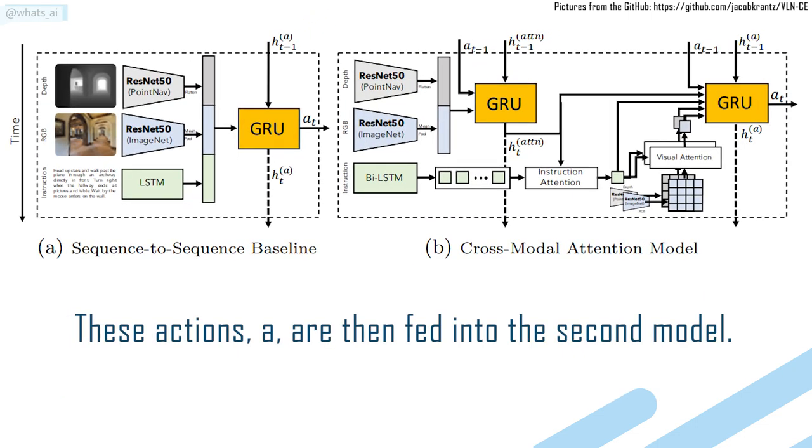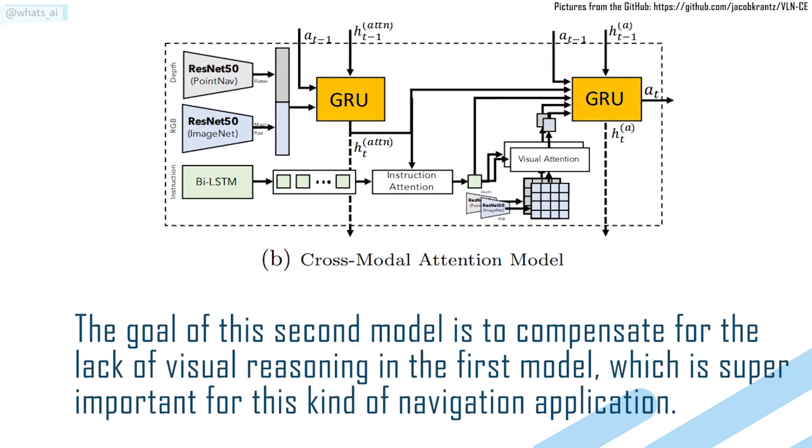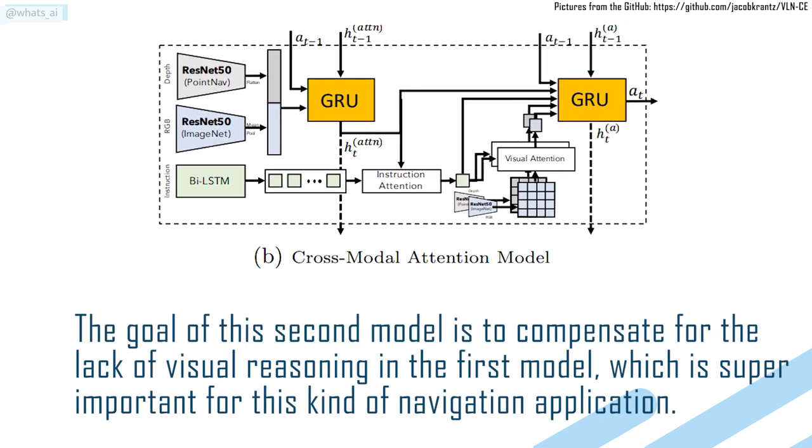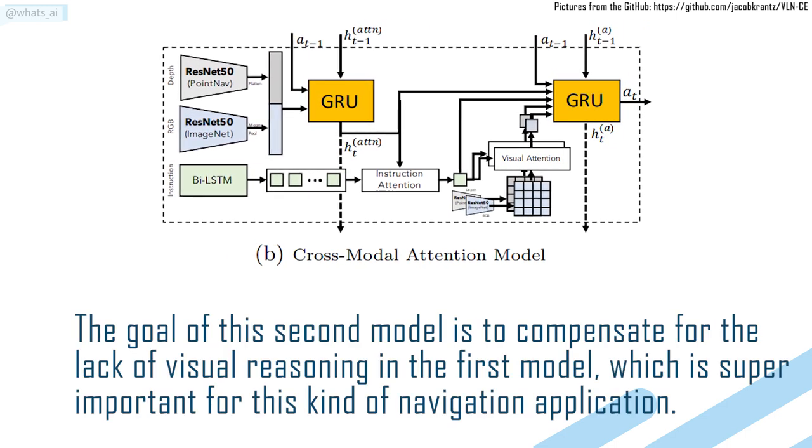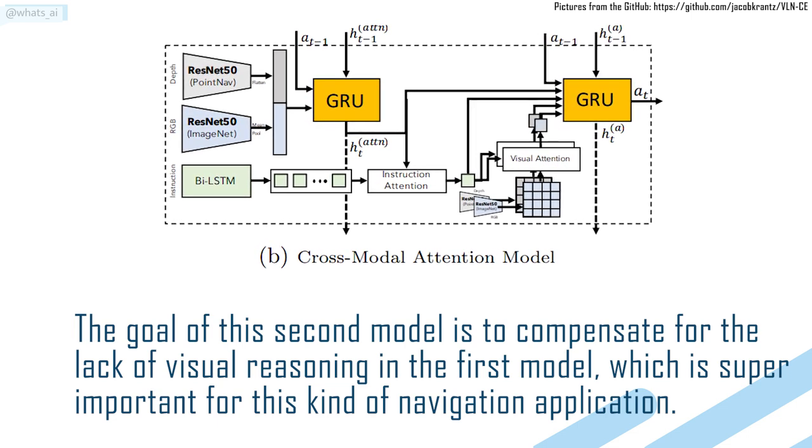These actions, A, are then fed into the second model. The goal of this second model is to compensate for the lack of visual reasoning in the first model, which is super important for this kind of navigation application.